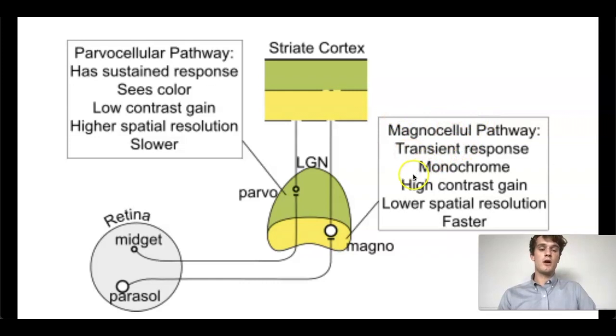Magnocellular pathways are going to be involved in motion. These are going to be faster processing, kind of like a higher shutter speed on the camera, but they won't be as high acuity or as detail focused. So when you see parvo, I want you to think of pigment for color. And when you see magno, I want you to think of motion for spatial resolution and fast motion processing.